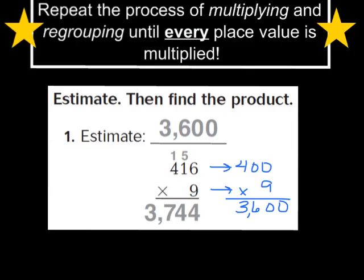That estimate is going to help keep me on track to make sure my exact answer is what it should be. Now let's take a look at how to find the product. I'm going to use place value and regrouping as I multiply these numbers together. First, we're going to multiply the ones. So I'm going to take my 9 and multiply it by the 6, which is in the ones place. I know that 9 times 6 is 54, so I'm going to write my 4 down and regroup my 5.